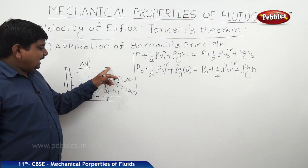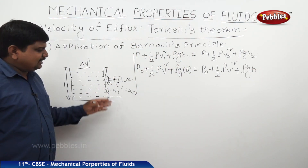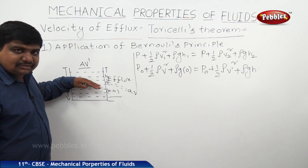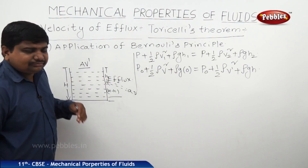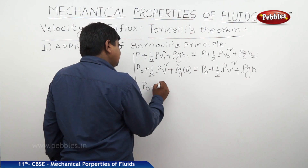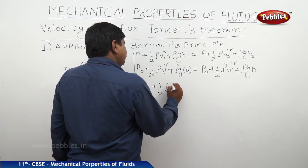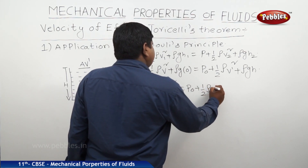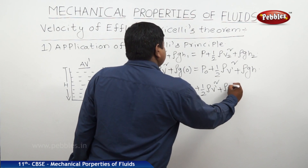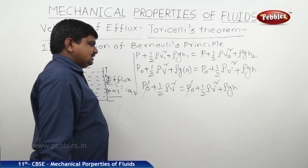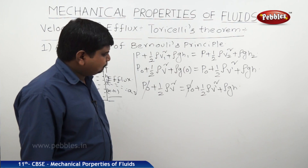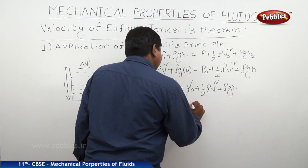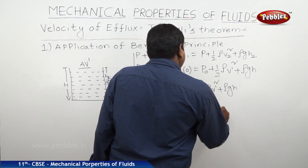The Bernoulli equation becomes: P0 + ½ρv² + ρg(0) = P0 + ½ρV-dash² + ρgh, where h is the depth of the hole from the top surface. P0 cancels on both sides, giving: ½ρv² = ½ρV-dash² + ρgh.